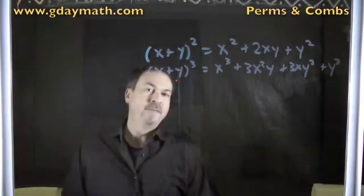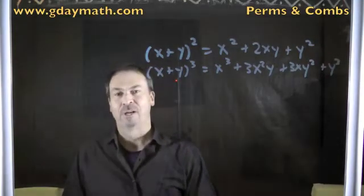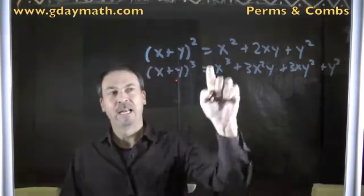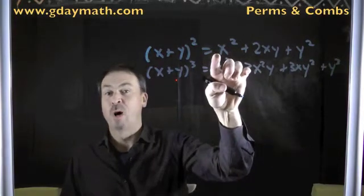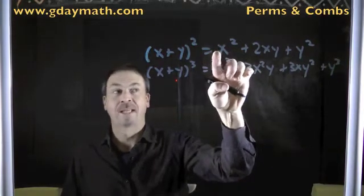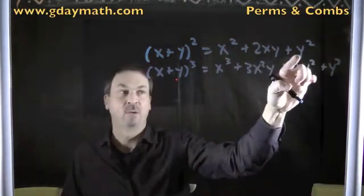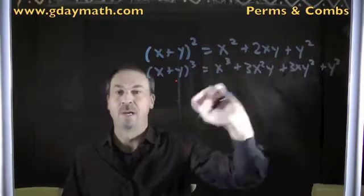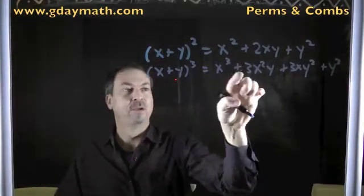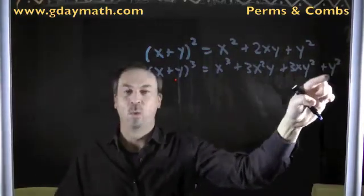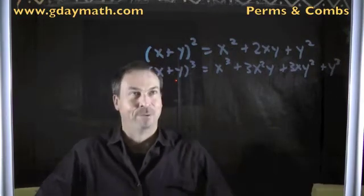But I look at this now and say, this is kind of curious. If you look at all the coefficients — it's really 1x squared, 2xy, plus 1y squared — I see 1, 2, 1. And the next one I see 1, 3, 3, 1, which is suspiciously like Pascal's triangle.